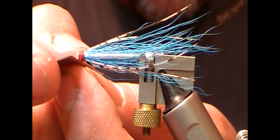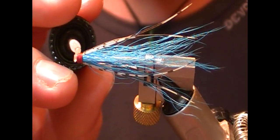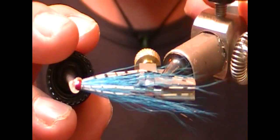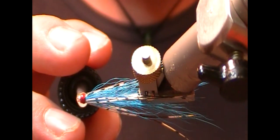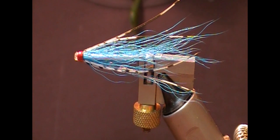Tie it off. And a bit of clear varnish or UV or whatever you want to use. I think in that dark red thread it just sets it off really well. So that's our fly tied.